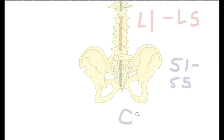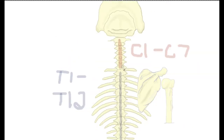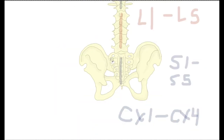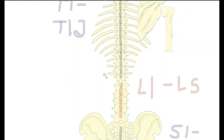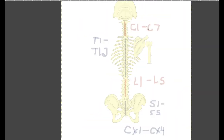The coccyx — abbreviated CX — typically has CX1 through four vertebrae, so usually three to four fused vertebrae. After infancy, these vertebrae fuse together and form one complete hard plate. The sacrum is five individual vertebrae fused together, and the coccyx is usually three or four fused vertebrae. In summary: cervical — 7; thoracic — 12; lumbar — 5; sacrum — fused 5; coccyx — fused 3 or 4.